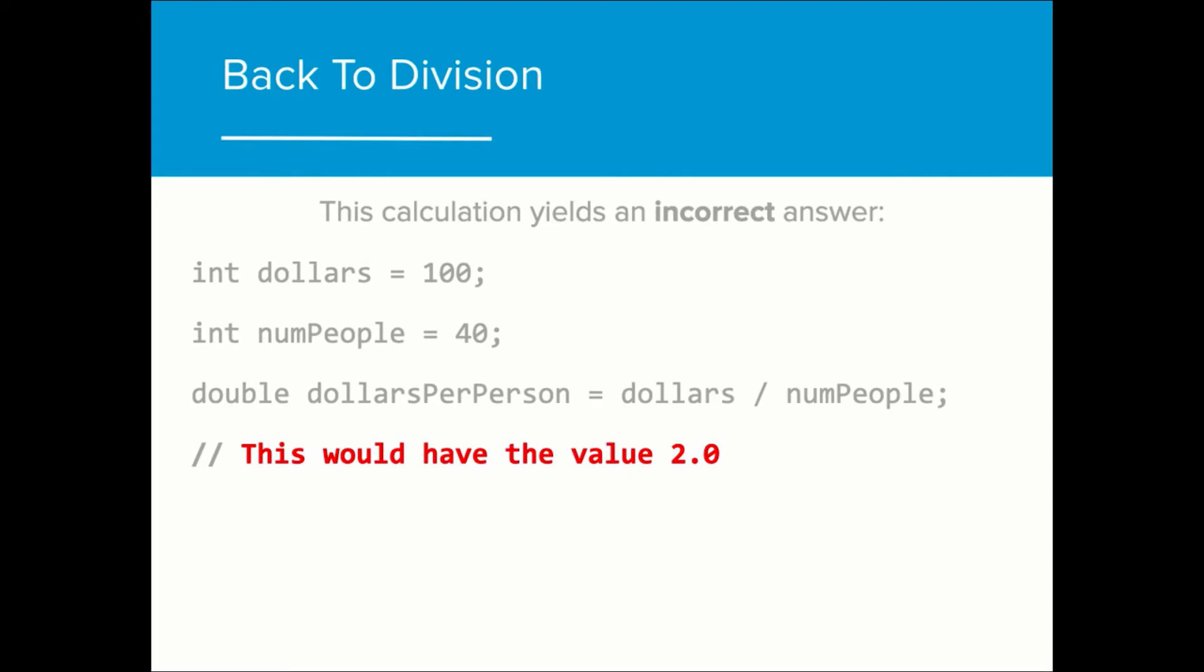Casting is especially important when considering how numerical values can change during division. In this example, we are attempting to figure out how many dollars we are able to give each person. Because the two values, dollars and num people are ints, the dollars per person value will be truncated to equal 2. If we are looking to figure out the exact number of dollars per person, this calculation will not provide the correct answer.